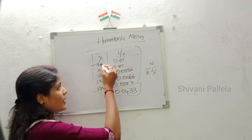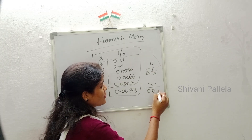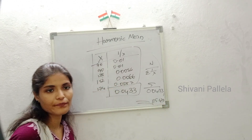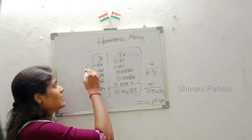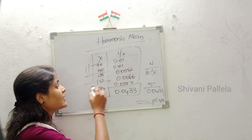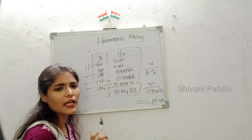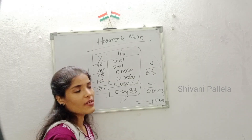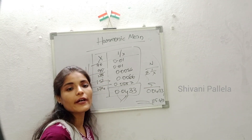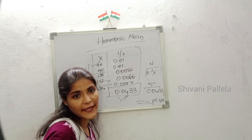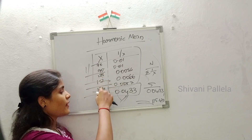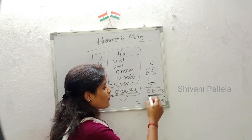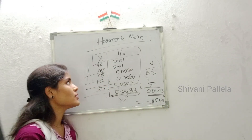Substitute into the formula: HM = n / Σ(1/x). Number of observations n = 5. So HM = 5 / 0.0433 = 115.473. This is the harmonic mean. They give the X column, you divide each into 1/x, total the column, then substitute n and Σ(1/x) into the formula.